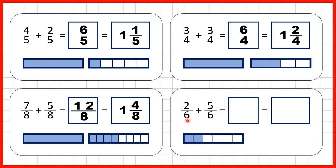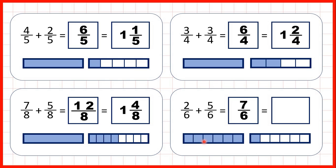Finally, we have two-sixths plus five-sixths. That's seven-sixths altogether, because the denominator stays the same and we just add the numerators, and each of these pieces is one-sixth so altogether we have seven pieces. Again we can change it to a mixed number — grouping to make one whole gives us one and one-sixth — because seven divided by six is one remainder one, and the denominator of a mixed number is always the same as the denominator of the improper fraction.